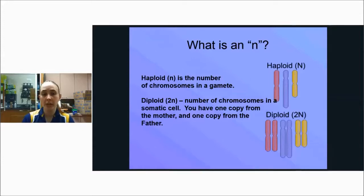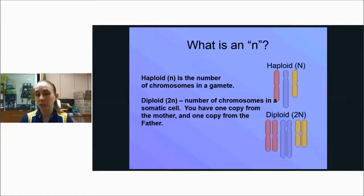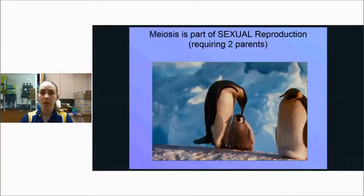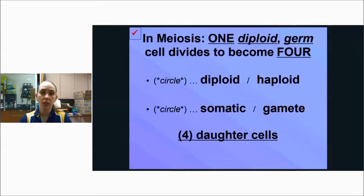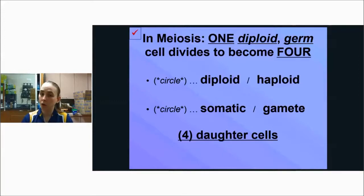You have one copy from your mother and one copy from your father. In haploid, you just have one of each chromosome; in diploid, you have two of each — one from each parent. Meiosis is part of sexual reproduction, requiring two parents. In meiosis, one diploid germ cell divides to become four cells. The end result — are they haploid or diploid? Haploid.